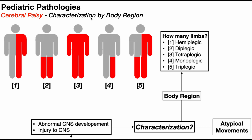When we characterize cerebral palsy by body region, we're essentially asking how many limbs are affected. The trunk, head, and neck can be affected, but we're mainly thinking about arms and legs. If the entire left half — so the left arm and left leg — is affected, this would be hemiplegic CP.